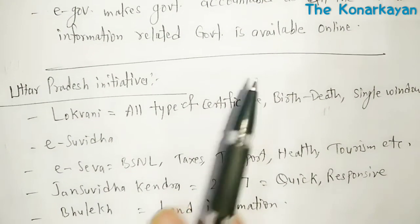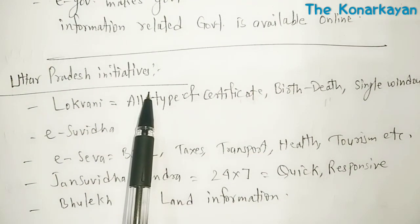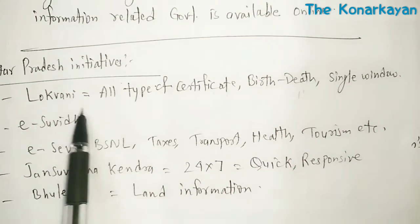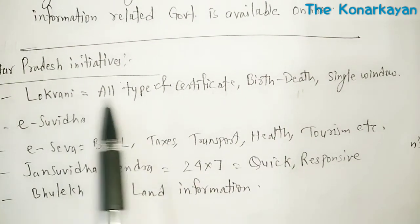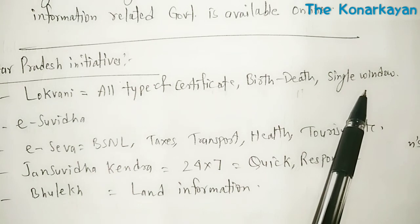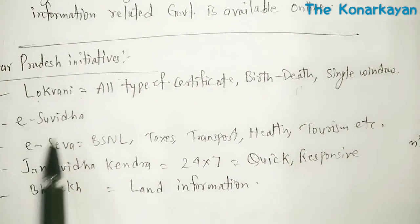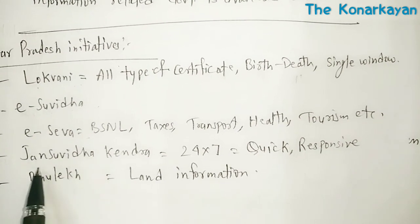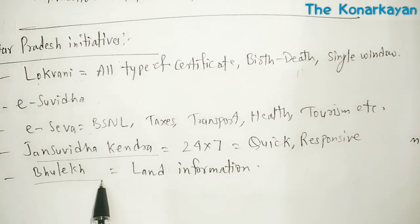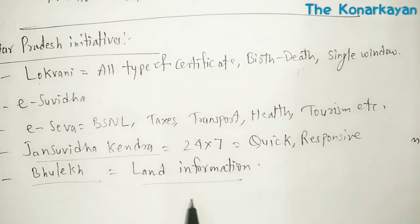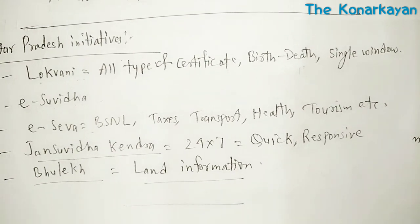Looking at Uttar Pradesh's initiatives in e-governance: Lokwani provides all types of certificates under a single window. Other initiatives include e-Subhida, e-Seva, Jan Subhida Kendra, and Bhulek for land information. This covers the details on governance, good governance, and e-governance. Thank you.